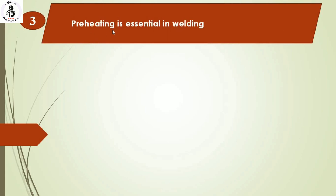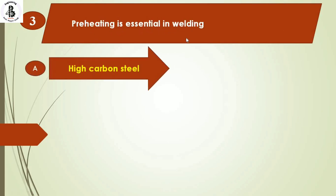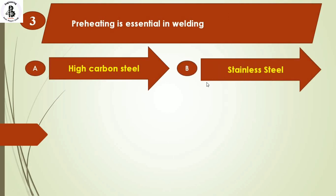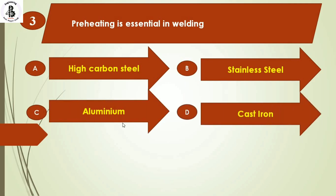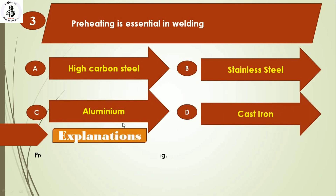Preheating is essential in welding of: Option A: high carbon steel. Option B: stainless steel. Option C: aluminum. Option D: cast iron. Basically, preheating is essential for cast iron welding. So the right answer is option D.